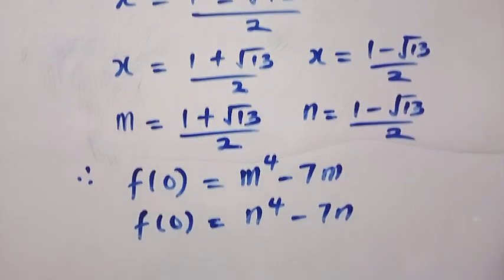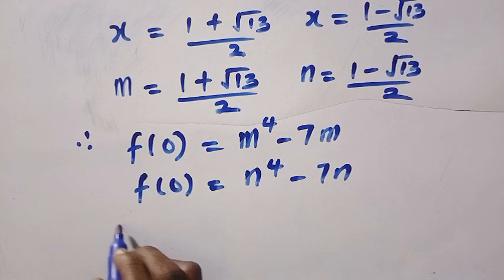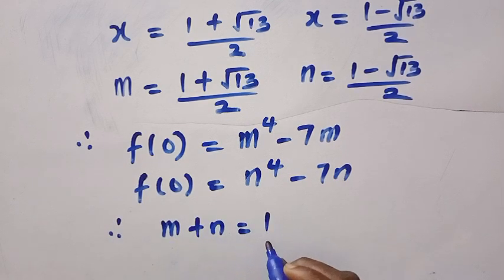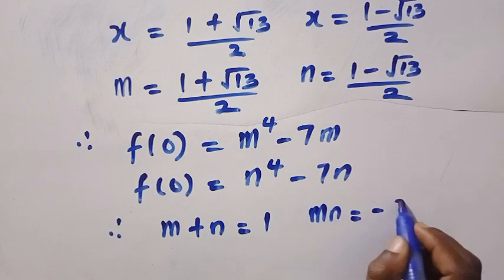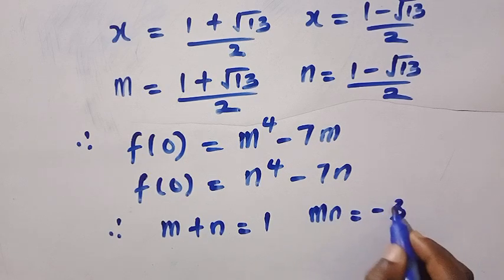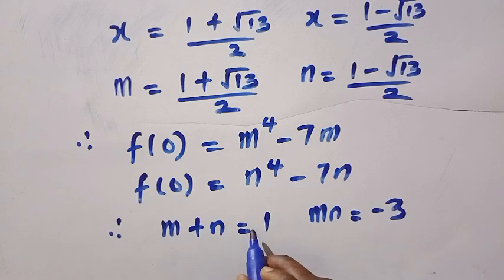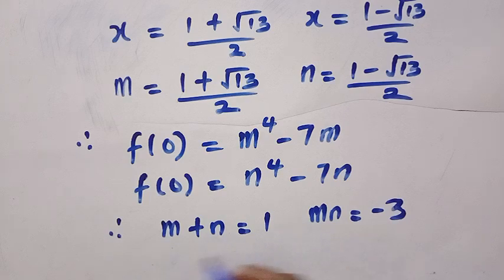Suppose I want to find m plus n using properties of the quadratic. For the sum of roots, m plus n equals minus b over a, which gives us 1. And for the product of roots, mn equals c over a, which gives us minus 3.